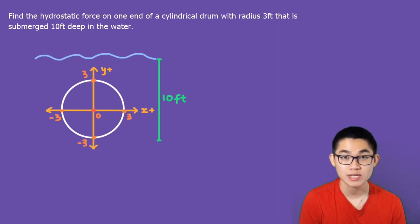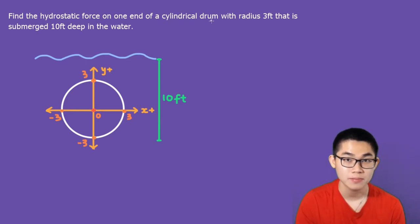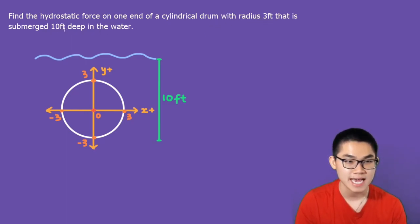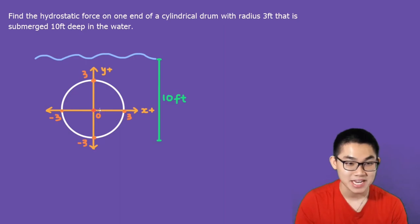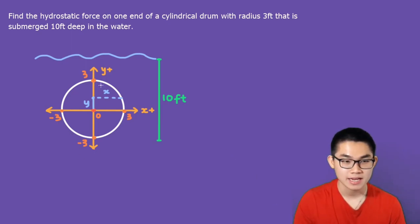In this video I'm going to show you how to calculate the hydrostatic force acting on a circular object submerged in the water. The problem says: find the hydrostatic force on one end of the cylindrical drum, which is basically just a circle with radius three feet that is submerged 10 feet deep in the water. The first step is to put the x and y-axis onto this diagram, placing it at the center of the circle.